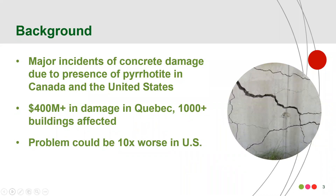There have been major incidents of concrete damage due to the presence of pyrite in both Canada and the United States. In Quebec, there have been over $400 million in damage. Over a thousand buildings have been affected and the final total is in no way yet clear. The problem can be 10 times worse in the United States. Damage appears over years, not immediately. And when it does occur, it often ends up looking similar to the image in the slide.